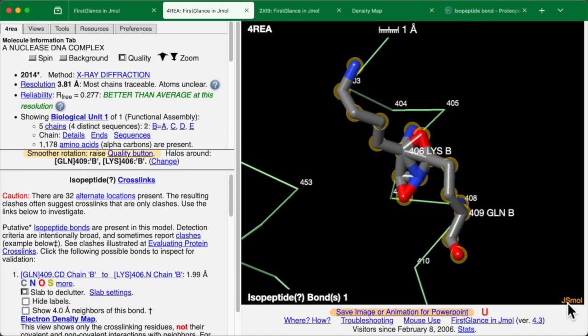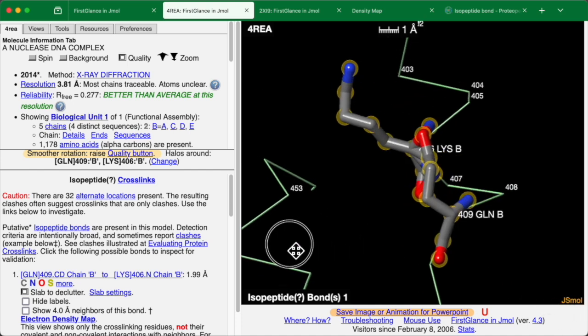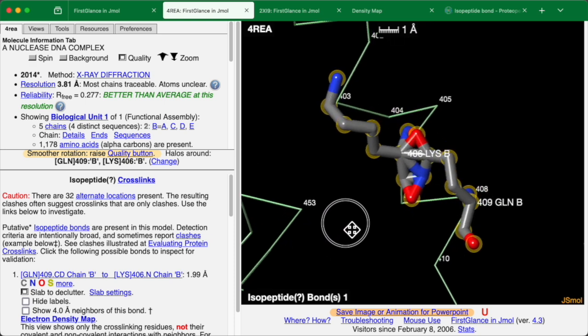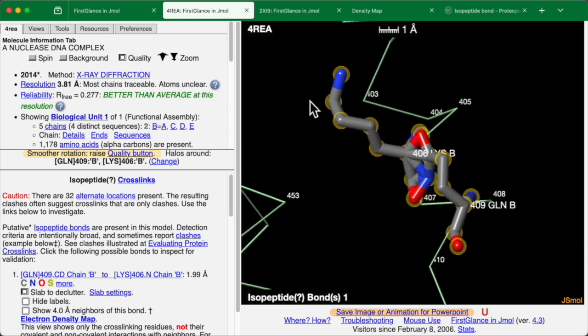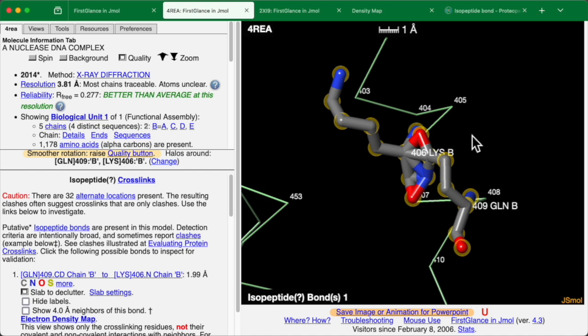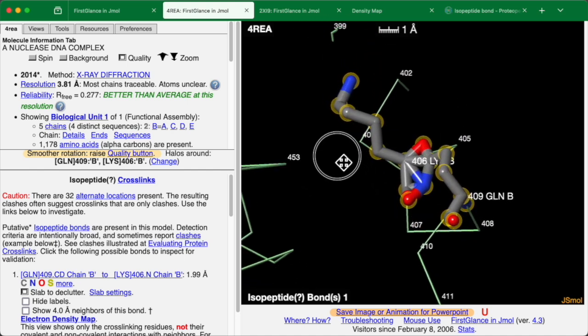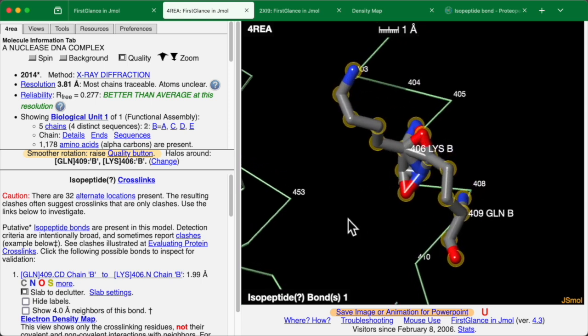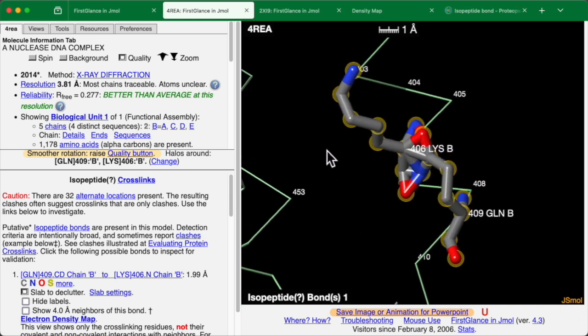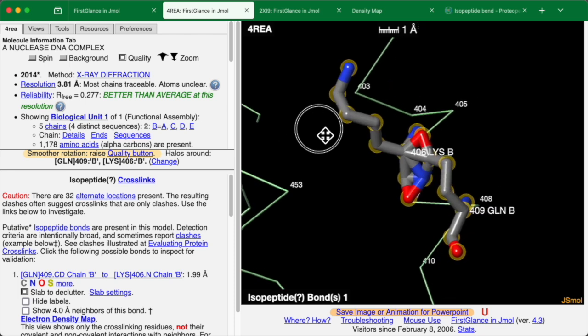It should be pointed out that Jsmol, the program that renders the molecule in FirstGlance, assigns or draws, let's say, sticks wherever two atoms are the right distance from each other for a covalent bond. The information on where covalent bonds are in the model is not in the model data file. It's up to Jsmol to figure that out. In this case, the atoms are in inappropriate places. And so we get this kind of a mess.